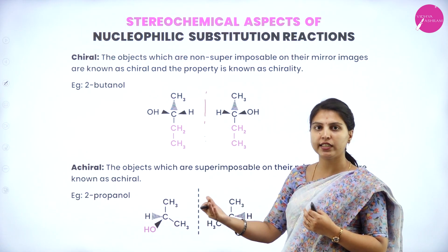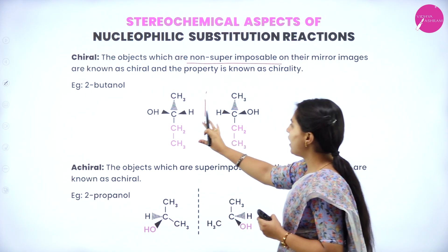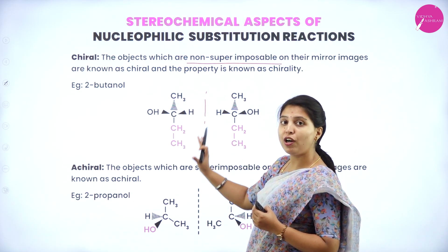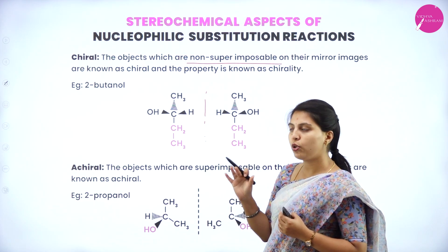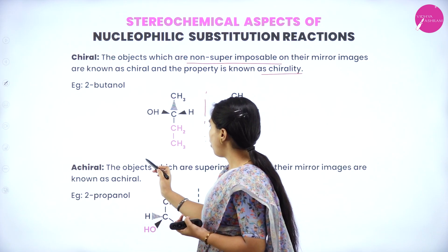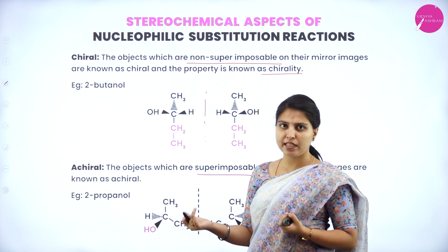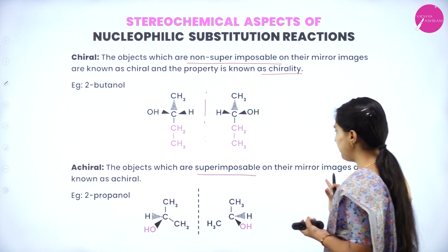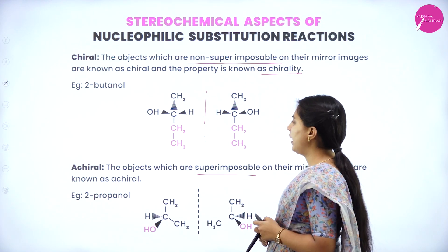The definition again: objects which are non-superimposable on their mirror images — these are mirror images of 2-butanol. If we take this compound and place it on the other mirror image, it will not superimpose. Those compounds are called chiral, and the overall property is called chirality. Next, achiral: the objects which are superimposable on their mirror images are called achiral. Taking 2-propanol as an example — its mirror image, when placed on it, will superimpose. Those superimposable compounds are called achiral.